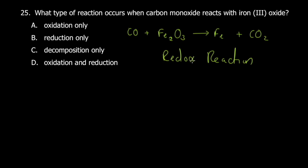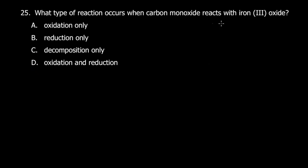A redox reaction involves both reduction and oxidation. The iron ore (Fe₂O₃) is reduced to iron — it loses oxygen. Carbon monoxide is oxidized — it gains oxygen. That's why we choose redox reaction.